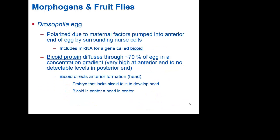In fruit flies, where most of this work is done, they're easy to work with. They're animals and they have the same basic genetic layout that you do — even if they have wings, two giant eyes, and live on your bananas. Almost all of the pioneering work has been done in fruit flies as far as genetics. Drosophila is just the fancy scientific name for a fruit fly.